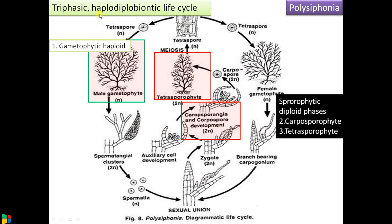The second point: it is called haplodiplobiontic because there is a single haploid phase followed by two diploid phases. The term closest to 'biontic' refers to the dominant phase — here there are two diploid phases against one haploid phase. That is why this is called a haplodiplobiontic life cycle.